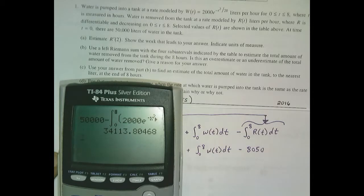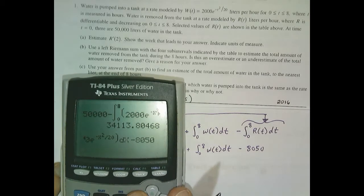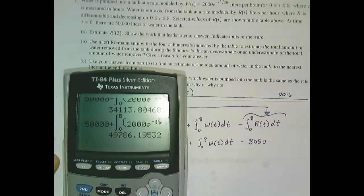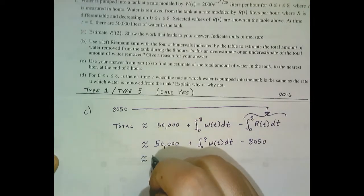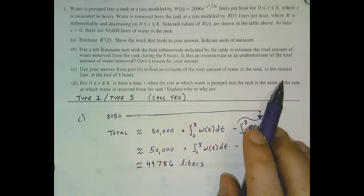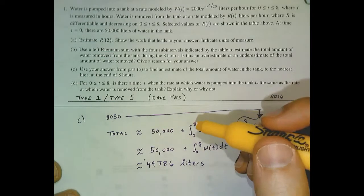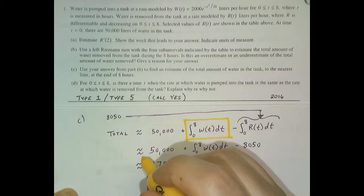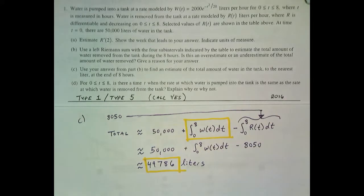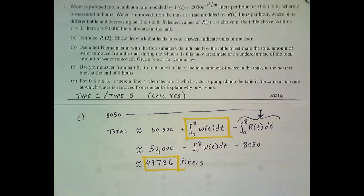That answer disagrees with the one on the paper. Let's see if I typed something wrong. I found the mistake — I put a subtract there; that should have been a plus. By pressing second enter I can pull up the last equation and fix it. There we go — 49,786. So approximately 49,786 liters, and since they say to the nearest liter, we truncate the decimals. Part C is worth two points: one for integrating W of t, and two for arriving at the correct estimate.